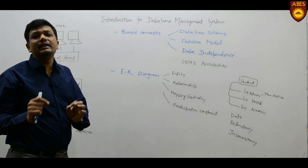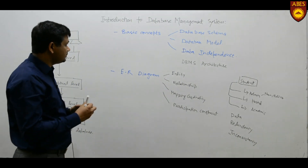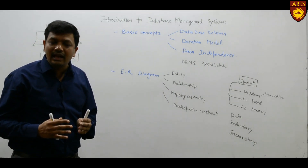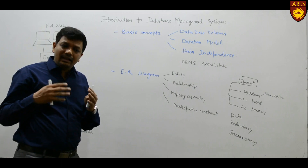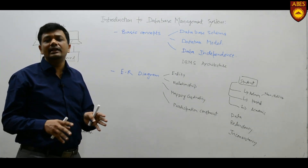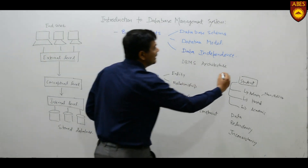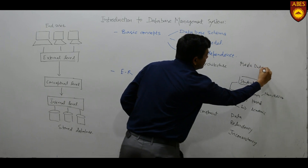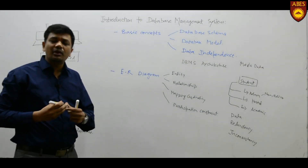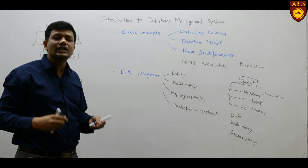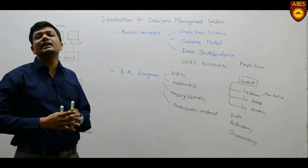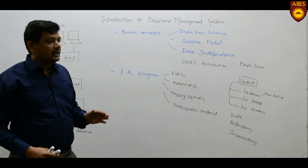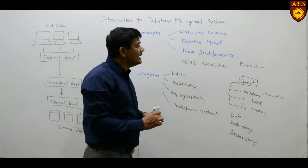There are certain other advantages of the database system, such as the self-describing nature of the database. This means the database stores all information related to itself — which is known as metadata, that is, data about data. User dictionaries, information about tables, information about indexes and sequences — all of these are already stored in the metadata, which is part of the database itself.